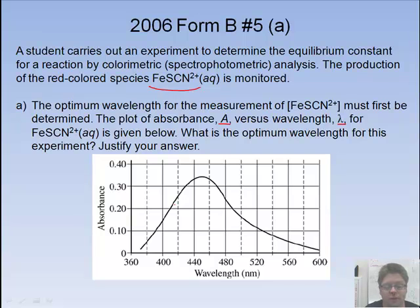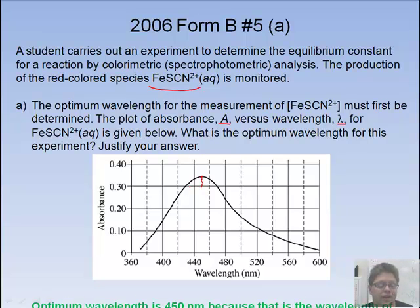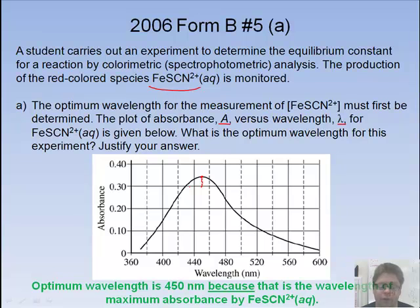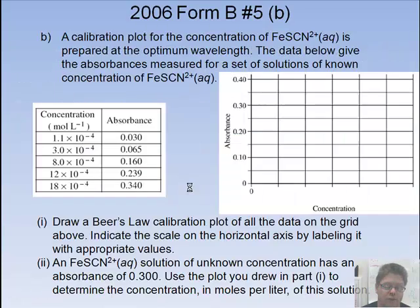Which point on the graph has the greatest absorbance? Right about here. There's our peak. Look at that. Take it all the way down to the wavelength. About 450 wavelength. Because the wavelength of maximum absorbance by FeSCN equals.